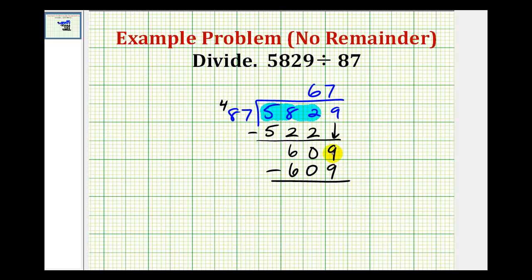609 minus 609 is 0. In this problem, we have no remainder because 87 divides evenly into 5,829. To verify this is correct, we could multiply 67 by 87 to confirm it equals 5,829.